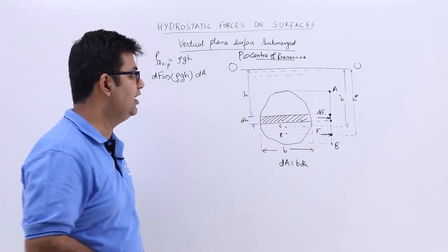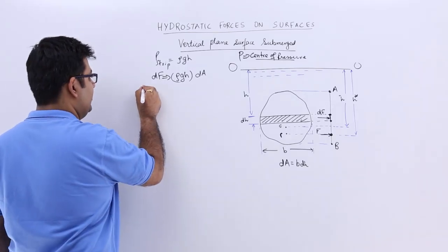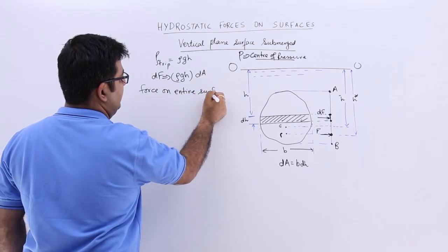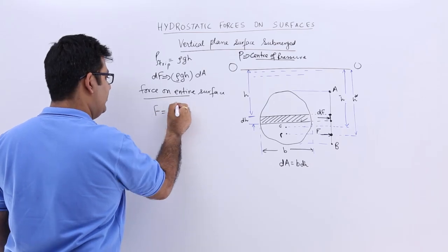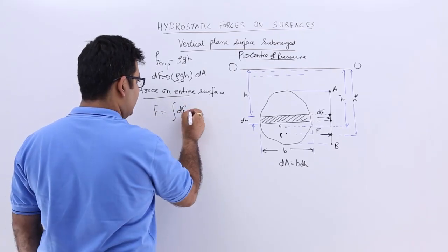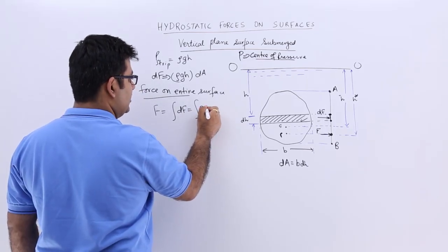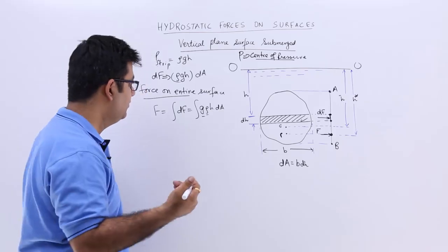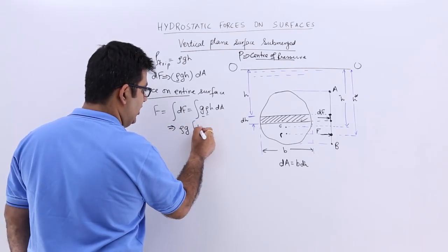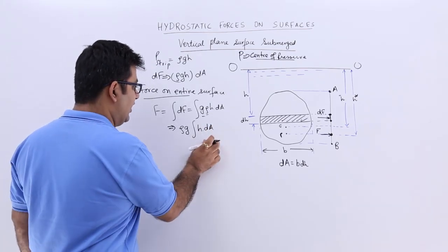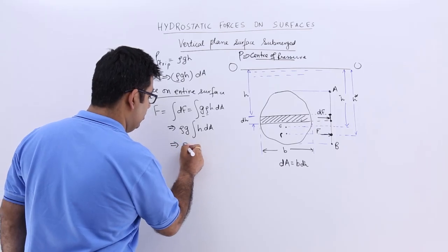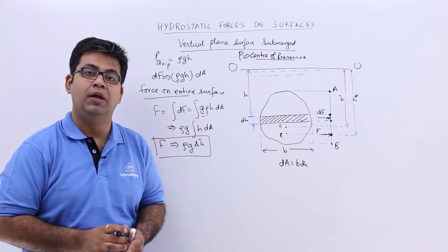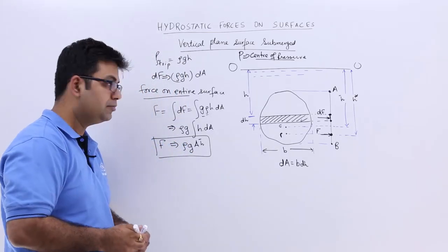If I have to find out the pressure force for the entire surface, I will simply integrate. The force on the entire surface, capital F, is the integral of DF, which is the integral of ρgH · DA. Since density and gravity are constant, taking them outside gives ρg times the integral of H · DA. The integral of H · DA over the entire surface equals A · H-bar, so the total pressure force is F = ρg · A · H-bar.